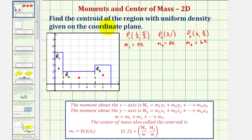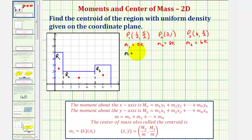Now we'll find the centroid of the entire region, treating these as three point masses. We'll find the moment about the x-axis, moment about the y-axis, the total mass, and then find the coordinates of the centroid using the formula. The total mass m equals m sub one plus m sub two plus m sub three, which is 5k plus 8k plus 6k, equaling 19k.